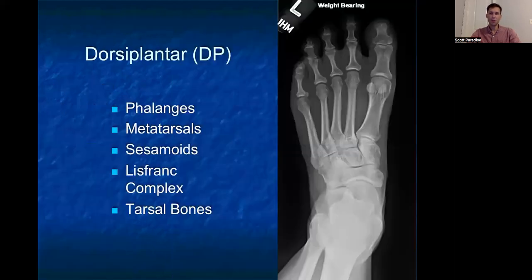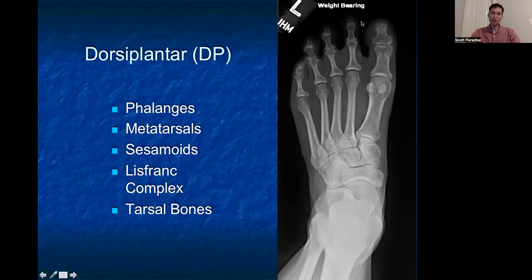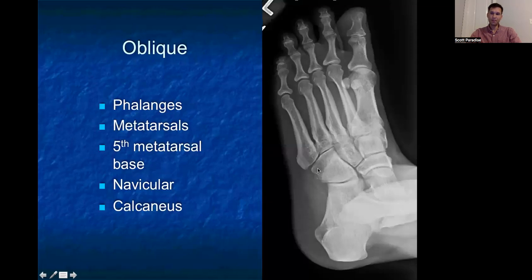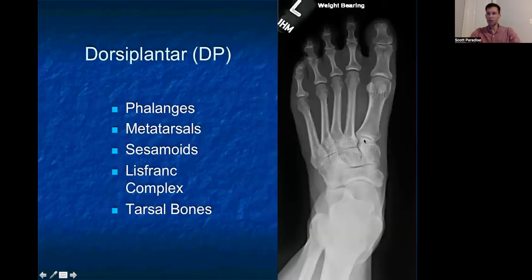Starting with our dorsiplantar view, we're always going to move from distal to proximal or proximal to distal — as long as we do it in a repetitive, systematic way. I always start distal and move proximal. I start with the phalanges, look at each bone, look at the cortices, look at the joint spaces, and move proximally looking at each one. Then I make my way to the metatarsals, look at the sesamoids, and finally the tarsal bones in this DP view. I also take a look at the Lisfranc complex here — don't want to miss that. We'll talk about that later in the talk.